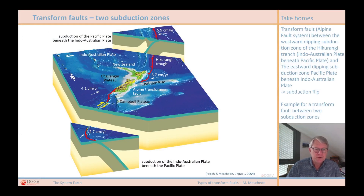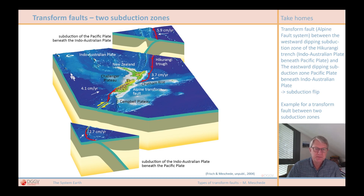A nice example of a transform fault connecting two subduction zones can be found in New Zealand. In northern New Zealand is the Hikurangi trough, where the Pacific plate is subducted beneath the Indo-Australian plate. South of New Zealand it is the other way around, where the Indo-Australian plate is subducted under the Pacific plate. Between the two subduction zones lies the Alpine transform fault zone, named after the New Zealand Alps. In the current constellation, the Alpine transform fault will probably become longer. Such a situation, in which the direction of subduction is reversed over a relatively short distance, is called a subduction flip.